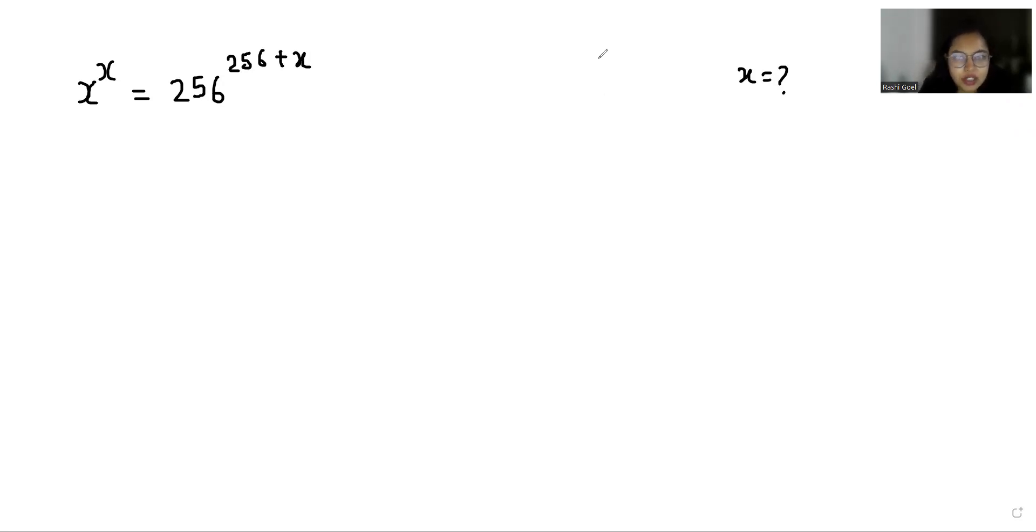So let's start with today's video solution. According to the exponent rule, x^(m+n) can be written as x^m times x^n. So x^x equals 256^256 times 256^x.